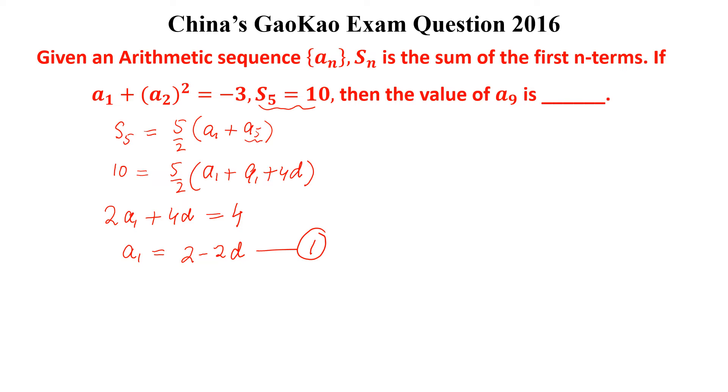Now from this equation we can write a_1 + (a_2)², so a_2 is a_1 + d, whole square equal to -3.